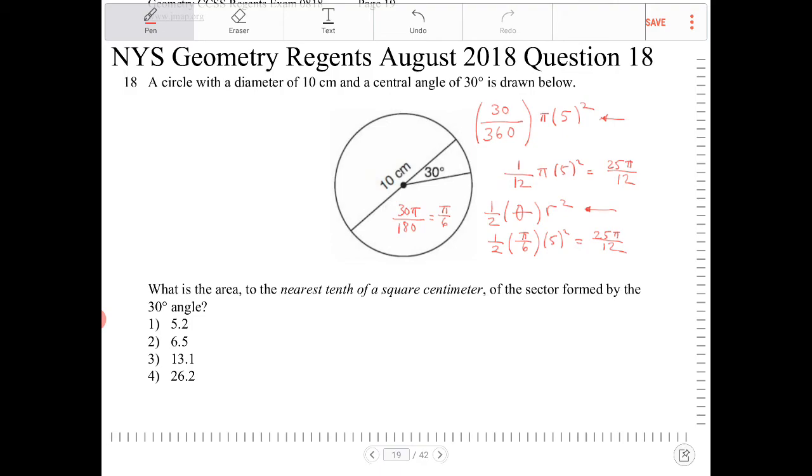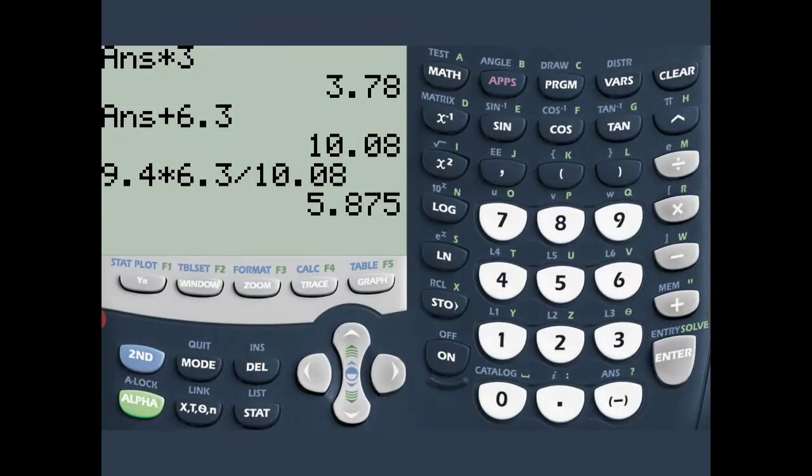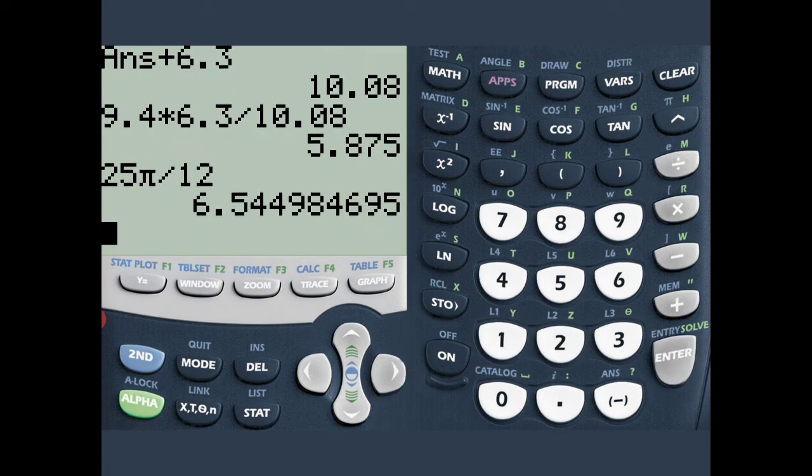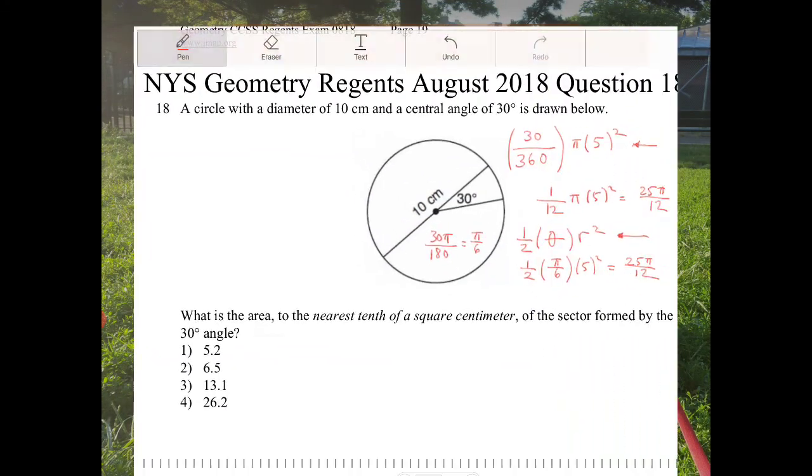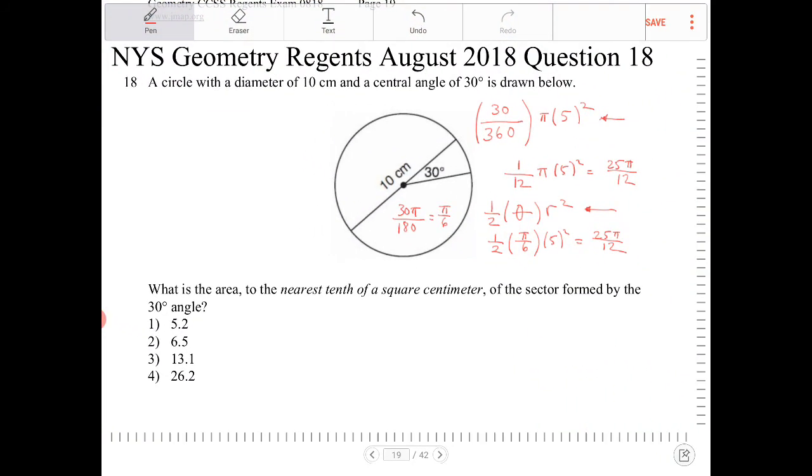So the answer choice here, we're going to have to enter this into the calculator. So 25 pi over 12, so 25 pi divided by 12, that is 6.5, and it's to the nearest tenth, so it's 6.5. That's option two.